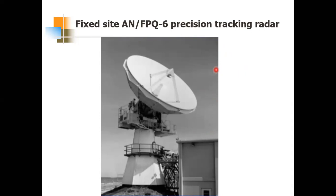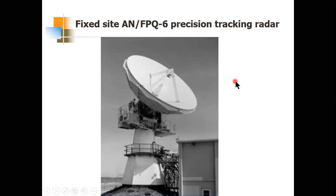The three methods of tracking are: monopulse tracking, sequential lobing, and conical scan. Under monopulse tracking, there are two subcategories: amplitude comparison monopulse and phase comparison monopulse. The ANFPQ-6 was an amplitude comparison monopulse tracking radar, tunable from 5.4 to 5.8 GHz — which is C-band — and was designed between 1958 and 1964.